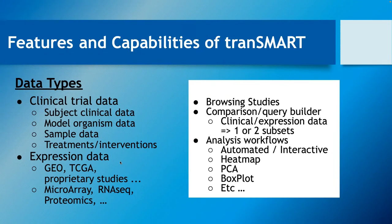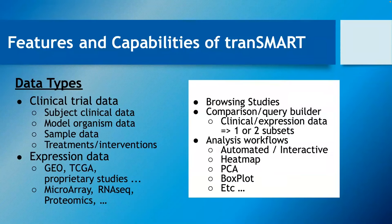The expression data can come from GEO — Gene Expression Omnibus at NCBI — the Cancer Genome Atlas, and various other sources. We've had data donated by the pharmaceutical industry and made public, and various eTRIKS IMI projects across Europe would often have a TranSMART server with their data at the end of a project, public or private depending on conditions. There were 40+ projects supported by eTRIKS, all using TranSMART.